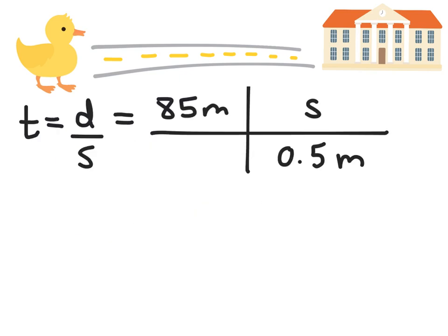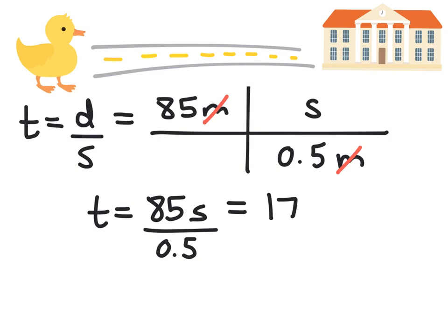The next step is to see if the units cancel. We're dividing 85 meters by 0.5 meters per second. My meters will cancel. We're going to be left with time equals 85 over 0.5 seconds as the meters have canceled. We can rewrite this and do that calculation to have 170 seconds.